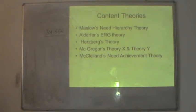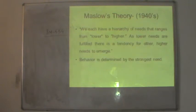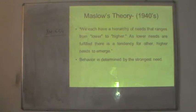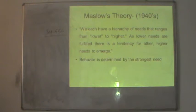These five sets of theories are very renowned theories categorized under content theories. The first and oldest one is Maslow's Need Hierarchy Theory, developed in the 1940s by Abraham Maslow. This theory believes that each person has a hierarchy of needs ranging from lower to higher. As lower needs are fulfilled there is a tendency for higher needs to emerge, and behaviour is determined by the strongest need.